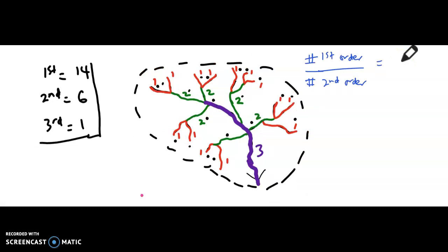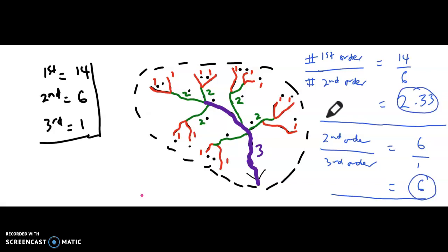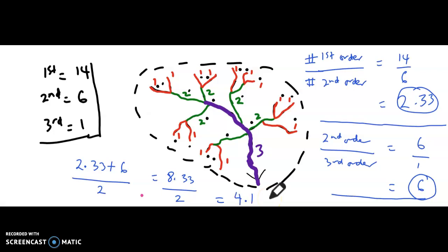We are doing the first ratio: the number of first-order streams divided by the number of second-order streams — 14 divided by 6 — which gives 2.33. For the second ratio: the number of second-order streams divided by the number of third-order streams — 6 divided by 1 — which equals 6. The bifurcation ratio is the mean of all ratios: 2.33 plus 6, divided by 2, gives 8.33 divided by 2, which equals 4.165.